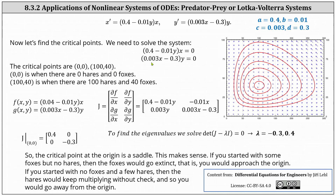Notice that 0.003x minus 0.3 equals zero when x is 100, and 0.4 minus 0.01y equals zero when y is 40. The critical point (0, 0) is when there are zero hares and zero foxes. The critical point (100, 40) is when there are 100 hares and 40 foxes.